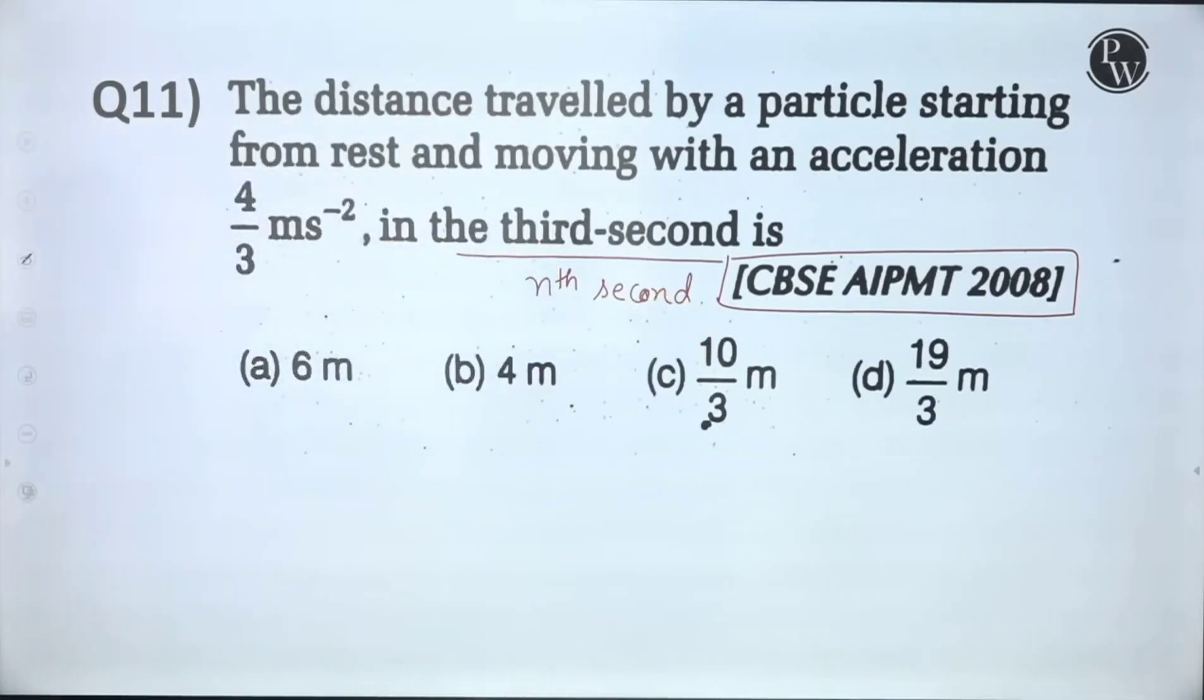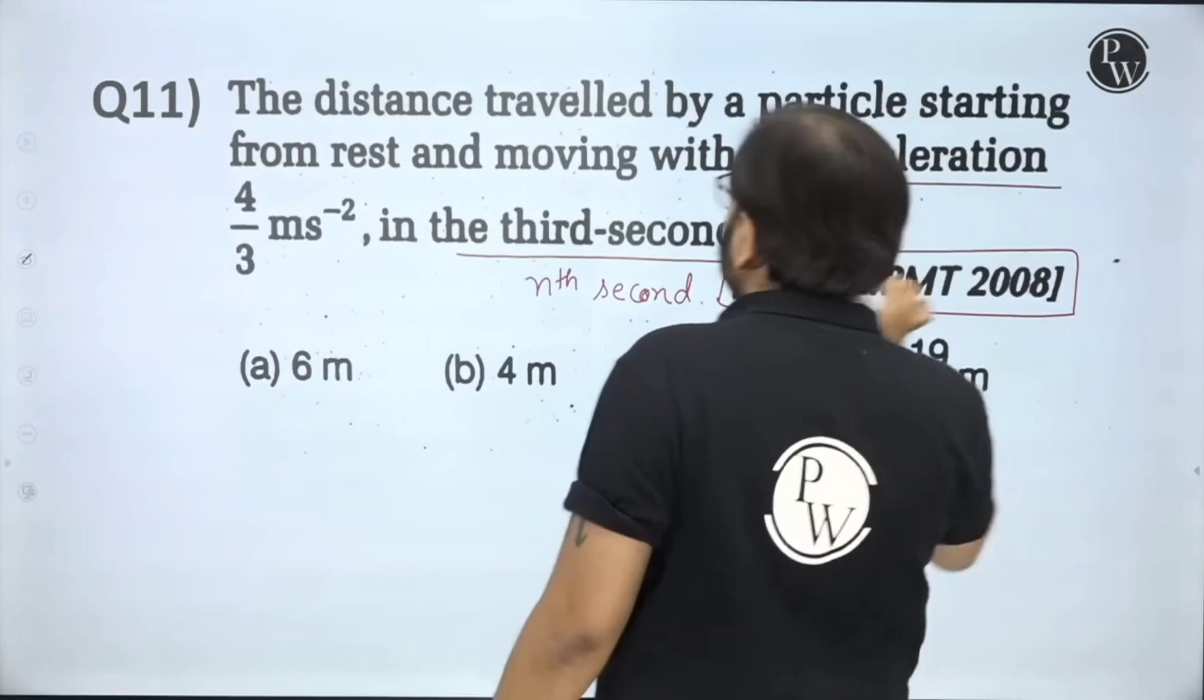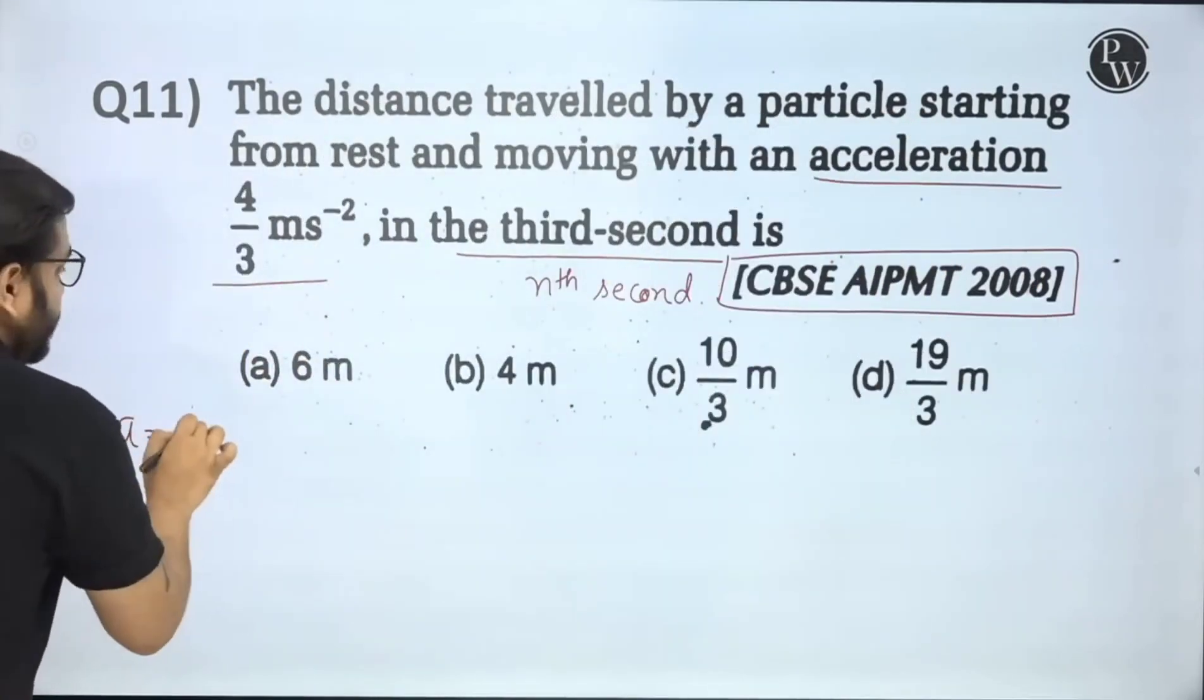Distance covered by a particle starting from rest and moving with an acceleration. Constant acceleration hai? Moving with an acceleration. Ittna ka acceleration kiasi hai? Constant. So, acceleration is 4 by 3 and this is constant.